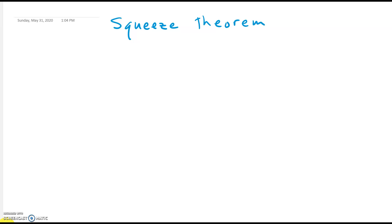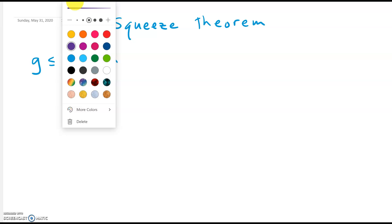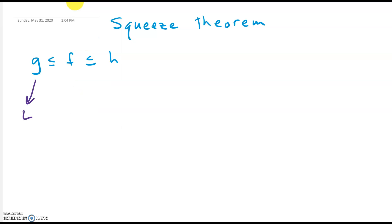Here's the squeeze theorem in multivariable calculus. The basic idea is very similar to single variable calculus. If you have some inequality like g is less than or equal to f, and f is less than or equal to h, and if g is approaching some value L as x approaches a, and h is approaching that same value L, then you're forced to conclude that f must also be approaching L. The same idea holds in multivariable calculus as well.